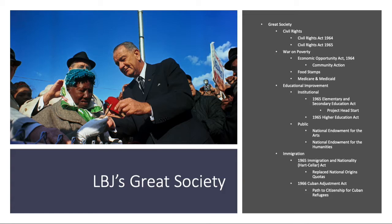Education changed dramatically under Johnson's administration. The 1965 Elementary and Secondary Education Act created programs like Project Head Start and tied desegregation into school funding — schools that refused to integrate would not receive funding, providing additional federal leverage to put integration into practice. The Higher Education Act of 1965 provided public assistance and student loan programs, and also tied integration in higher education to funding.